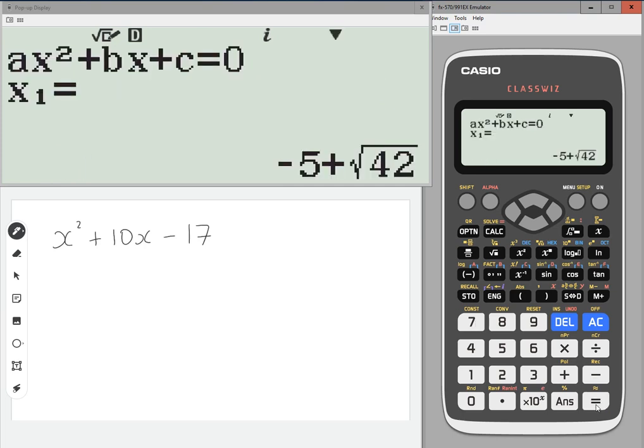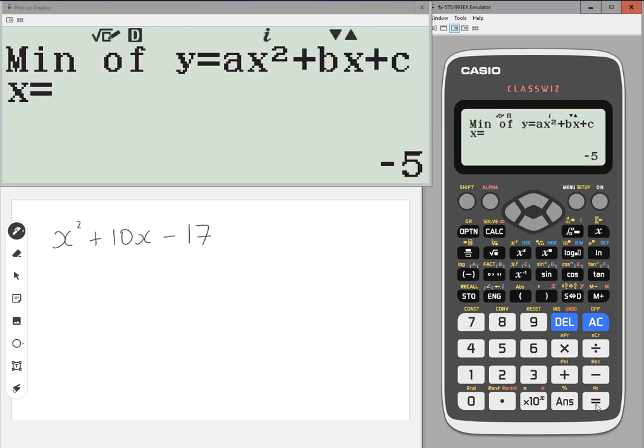And it will tell you where it's crossing the x-axis, minus 5 plus root 42 and minus 5 minus root 42, but we're not interested in those. Just press equals again, and it tells you the minimum value of x. So minus 5, and the y value is minus 42. These are the coordinates of the vertex of the parabola.